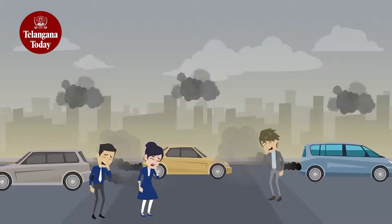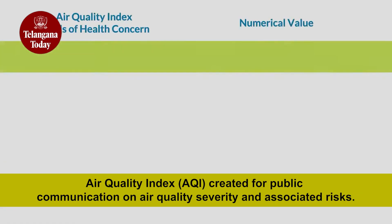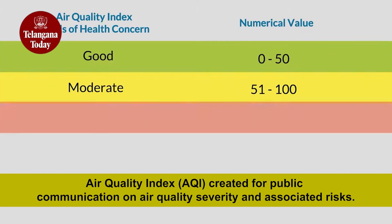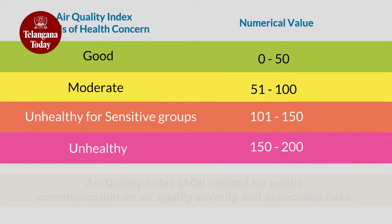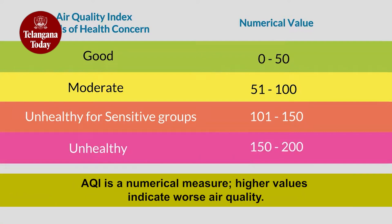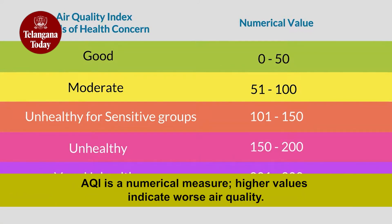The Air Quality Index was created to help communicate the severity of air quality levels for multiple pollutants to the public, the risks they carry, and recommended defensive measures. AQI is a number which is a measure of air quality — the higher the AQI, the worse the air quality.